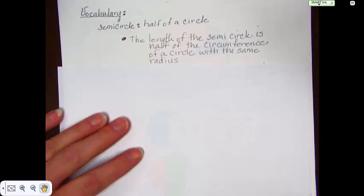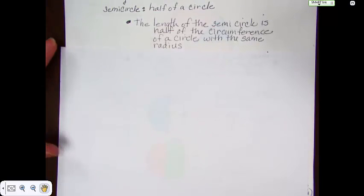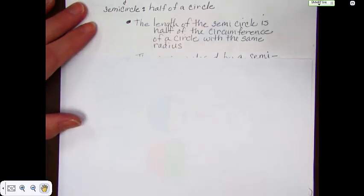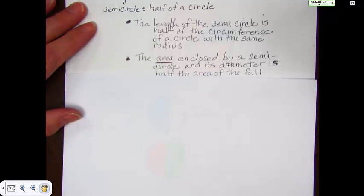Here's an important piece of information. The length of a semicircle is half of the circumference of a circle with the same radius. The area enclosed by a semicircle and its diameter is half of the area of the full circle.